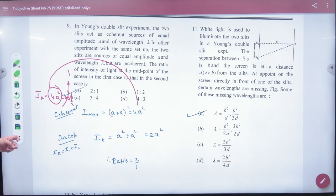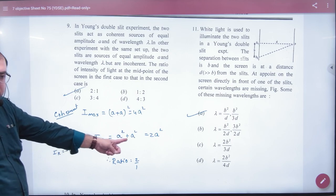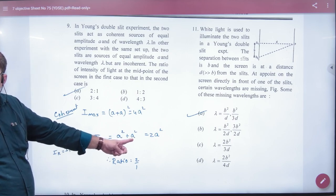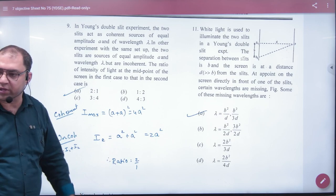Coherent is clear. What did we do with the incoherent? I₁ plus I₂. So if we divide them, what will be the ratio? 2 is to 1.